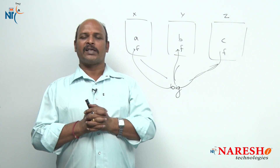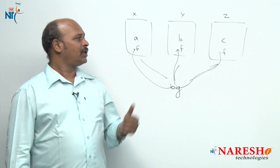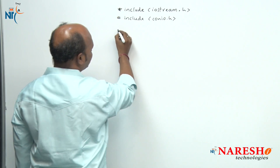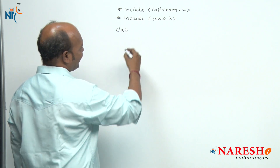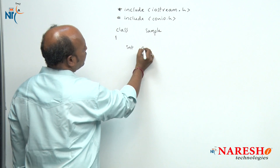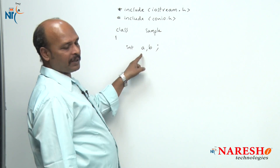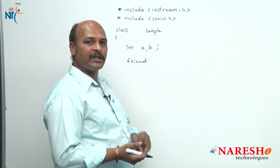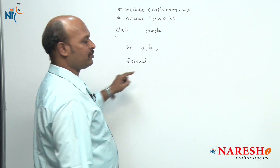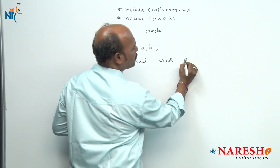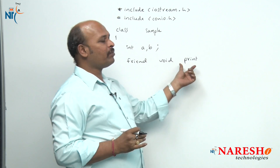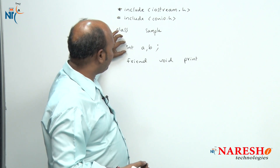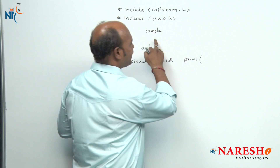Friend functions reduce program size because instead of declaring several functions, only one friend function is enough. Now I will show you how to work with a friend function. Here is a simple example: class sample with int a, b as data members. For the friend function declaration, every friend function declaration should be preceded with the friend keyword. The return type may be void, and the function name is 'print'. Since it is a non-member, you must send the object as the argument.